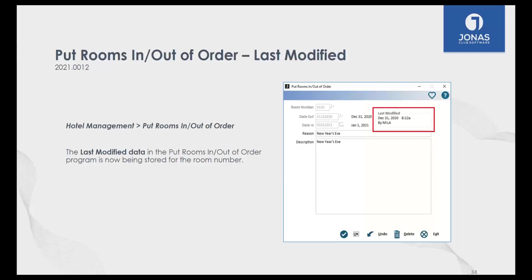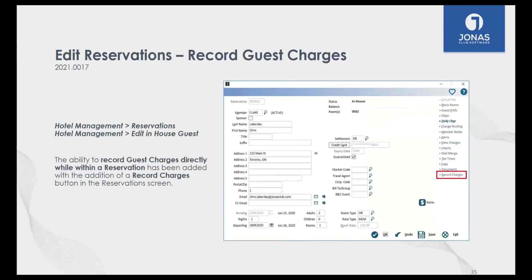A common theme you'll see with a lot of the new hotel features is small changes to make things more efficient and faster. Specifically, whenever you're in the hotel reservation screen and need to add charges to that booking, you no longer have to go out of this screen into Point of Sale. We have a quick link to a Record Charges button so you can record any charges right while you're in the hotel booking screen — similar to a chip processing charge from Club Management rather than going through POS.